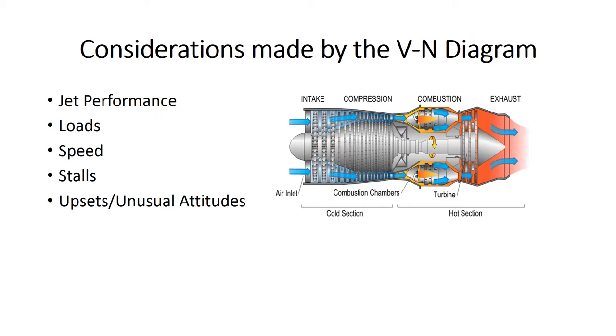The VN diagram works effectively because it is only created after much data compiling and simulations, which take into account the following factors: jet performance, loads, speed, stalls, upsets, and unusual attitudes.